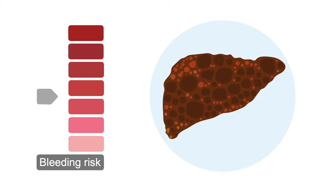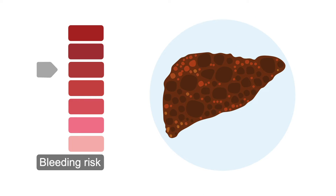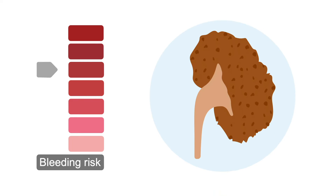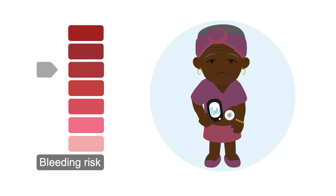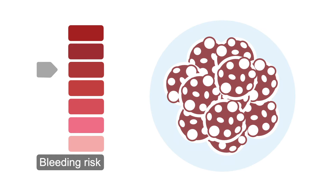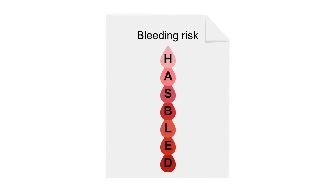Bleeding risk increases with a number of chronic conditions, including liver disease, kidney disease, diabetes, and cancer. The most popular way to assess bleeding risk is to use the HAZ-BLAD Scoring System.